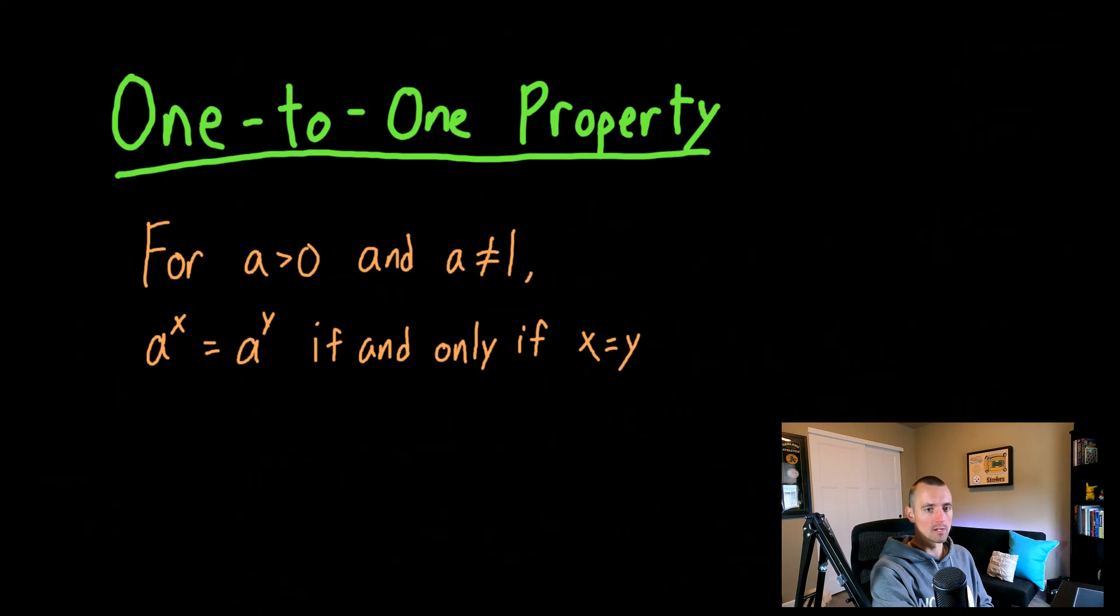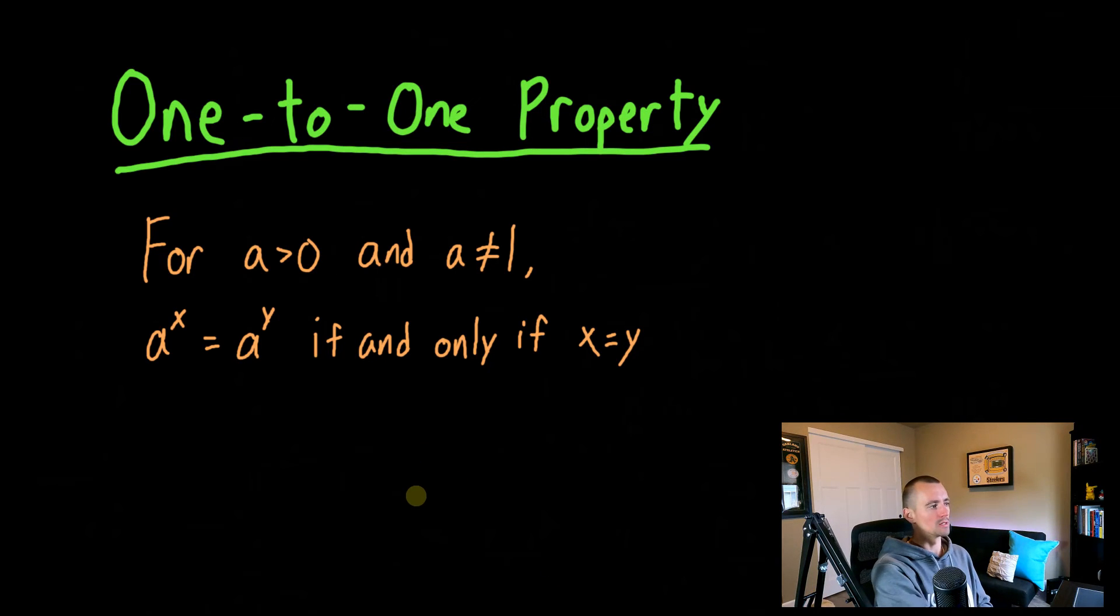So let me just jump down here real quick. We'll touch on this. So the one-to-one property just says if for any a greater than zero and any a that does not equal one, so basically any a that's not greater than zero except for one, so any positive number except for one. If you have a to the x equals a to the y, this will only work if x equals y.